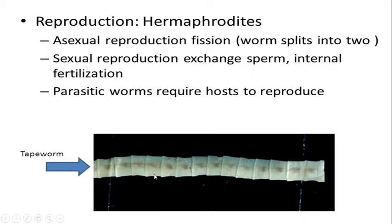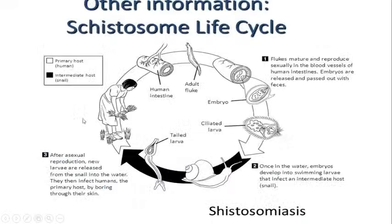Parasitic worms require a host to reproduce. Looking at the Schistosoma life cycle, the primary host is man and the intermediate host is the snail. In the life cycle, liver flukes mature and reproduce sexually in the blood vessels of the human intestine — they enter the human intestine through food consumption.